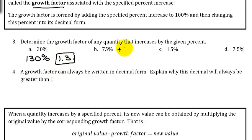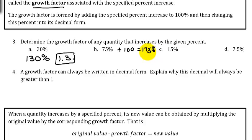For 75%, add 100 to get 175%. To convert a percent to a decimal, move the decimal point two positions to the left. The decimal point is behind the 5; moving it two positions puts it between the 1 and the 7, so that would be 1.75.